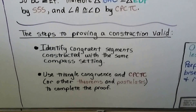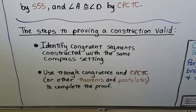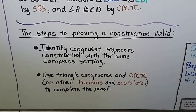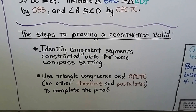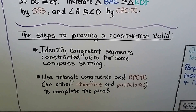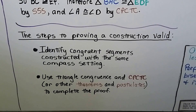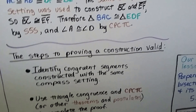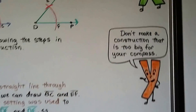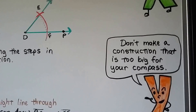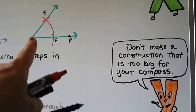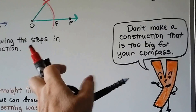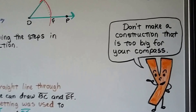The steps to proving a construction valid: first, identify the congruent segments constructed with the same compass setting. Then use triangle congruence and CPCTC — congruent parts of congruent triangles are congruent — or other theorems and postulates to complete the proof. Also make sure when doing a construction that your points and rays aren't too big for your compass, since it only opens so far.